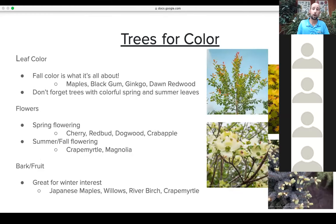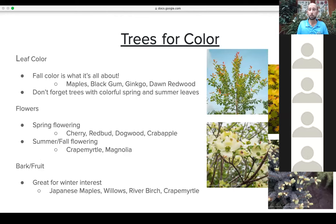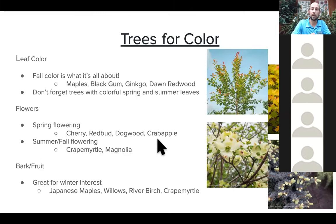Trees for color is probably one of the most popular reasons to select different tree varieties. Fall leaf color is what fall is all about — as temperatures dip below 50 to 60 degrees at night, you'll see color changes. Some favorites include black gum, which has brilliant fall color and good summer color; autumn moon Japanese maple, which goes orange and yellow in fall; red maples; ginkgo biloba; and dawn redwoods — all really reliable in our area for fall color.